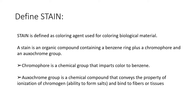The first and very important term is stain. A stain is defined as a coloring agent used for coloring biological material. A stain is an organic compound containing a benzene ring, plus a chromophore group and an auxochrome group. The chromophore group is a chemical group that imparts color to the benzene ring. The auxochrome group is a chemical compound that conveys the property of ionization of chromogen — that is, the ability to form salts and bind to the fibers of tissues — so that the stain properly colors the biological specimen.